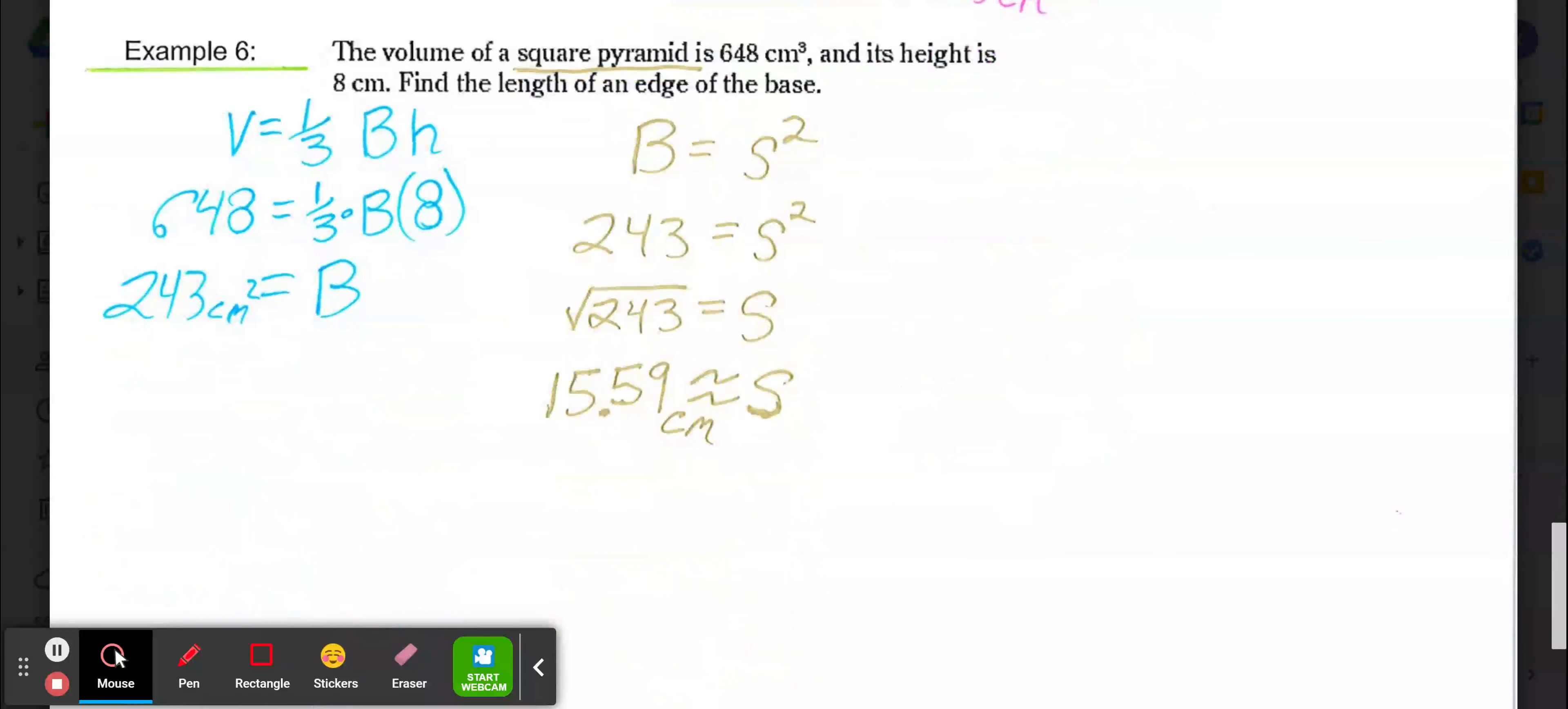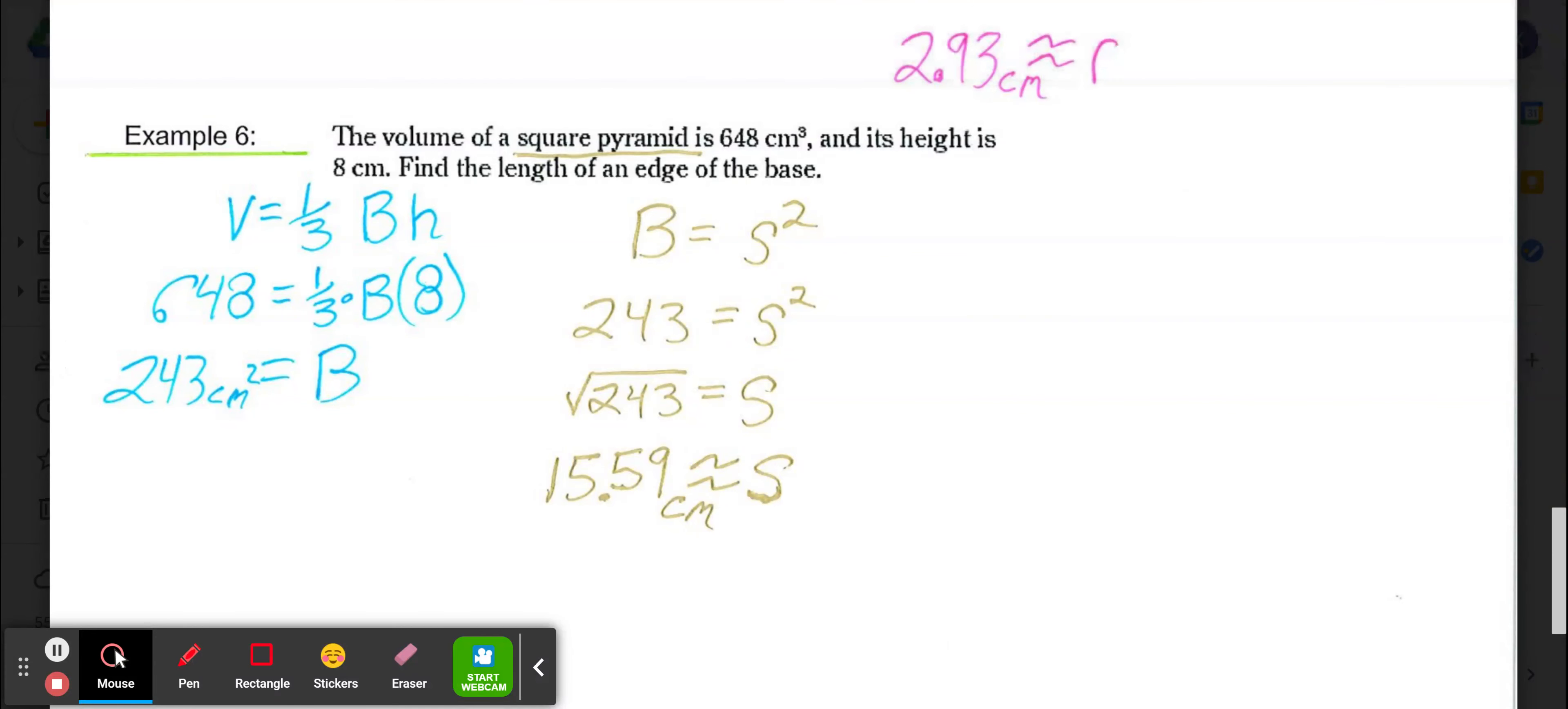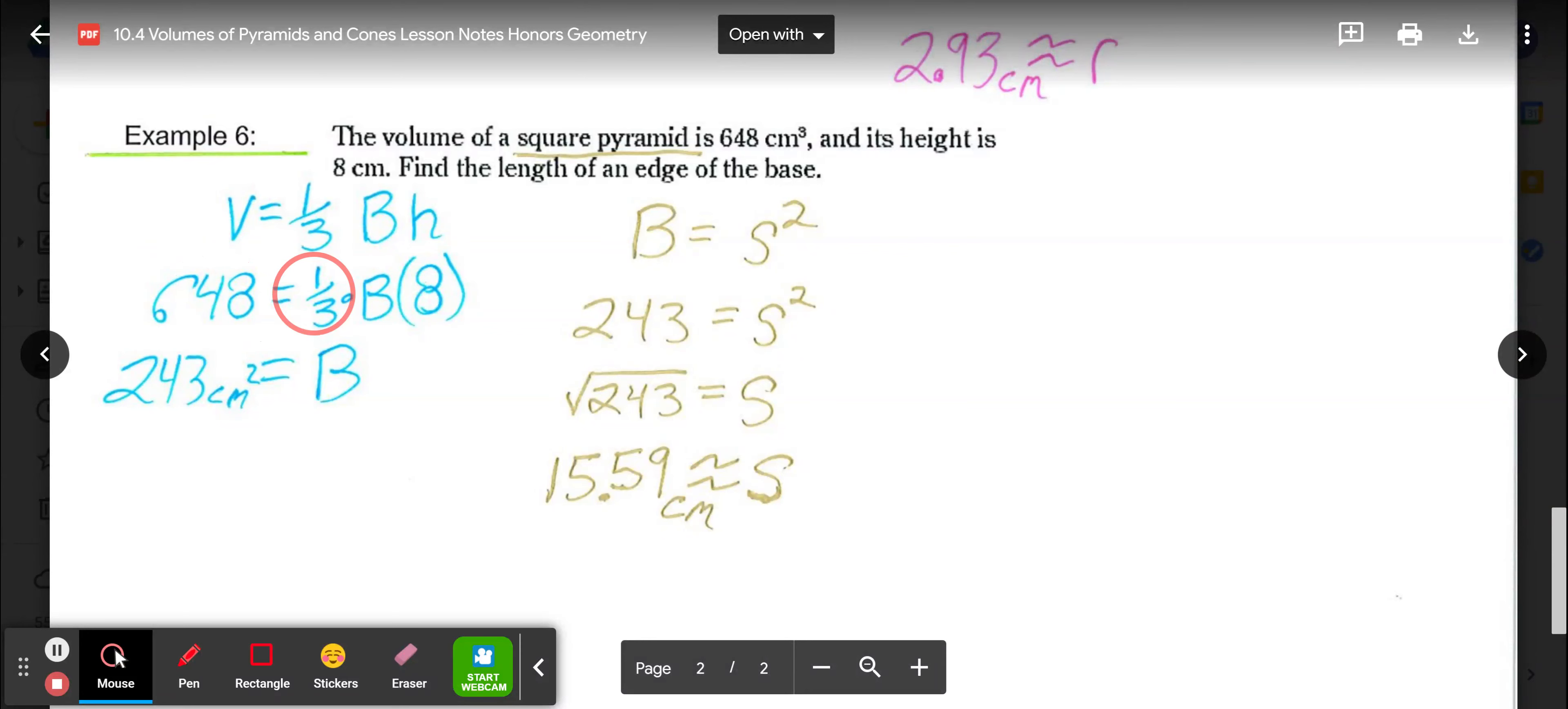Getting to our final example, we have example 6 dealing with a square pyramid. The volume of the square pyramid is 648 cubic centimeters. Height is 8 centimeters. Find the length of an edge of the base. Again, we're going to work backward to find the area of our base first. We knew our volume was 648, we knew the height of the pyramid was 8. So we'll use the volume formula to find B. So 648 divide by the one-third and then divide by 8. That gives us 243 square centimeters for the area of our base.